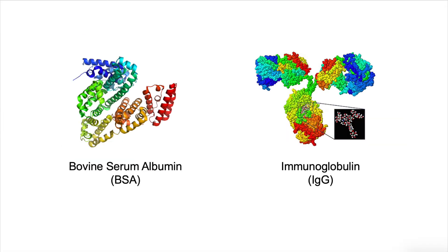Two common proteins used for standard curves are Bovine Serum Albumin (BSA) and Immunoglobulin IgG. These two proteins have different amino acid compositions, which leads to different standard curves and a slight difference in the final determination of unknown protein concentration. Because the color development is dependent on the amino acid composition of the protein, the presence of prosthetic groups, especially carbohydrates, also influences the protein assay.